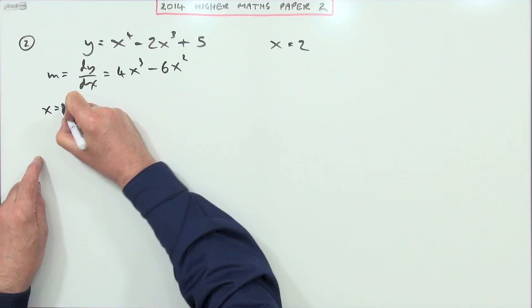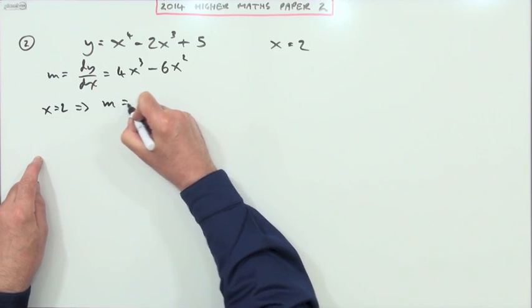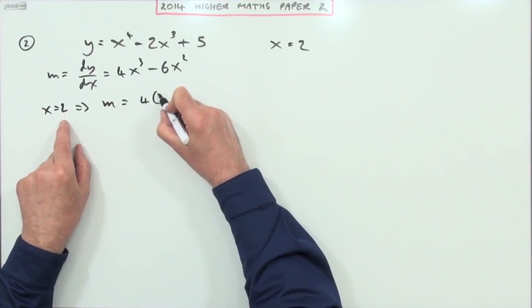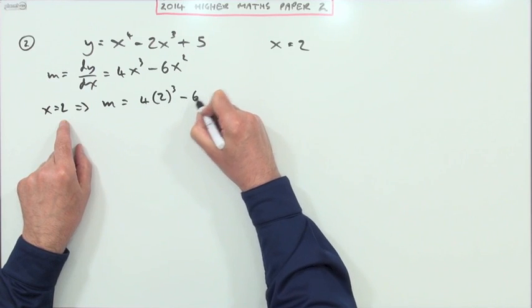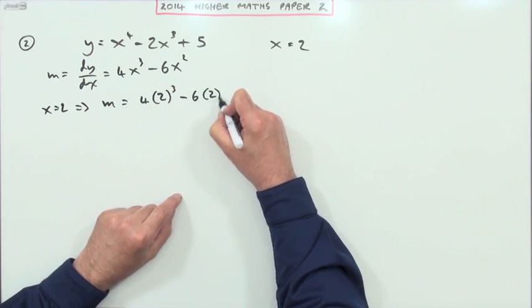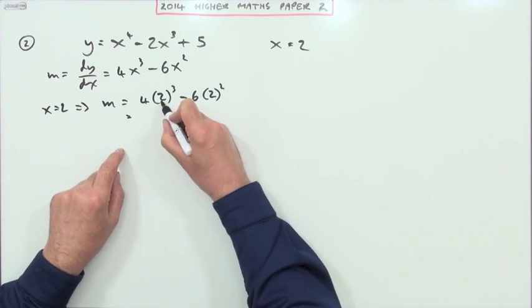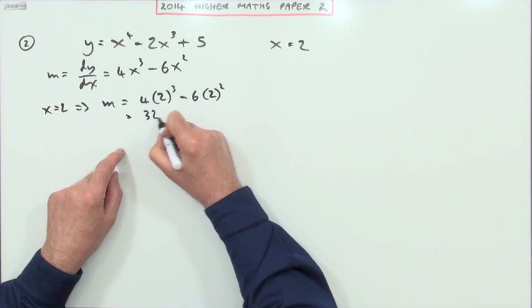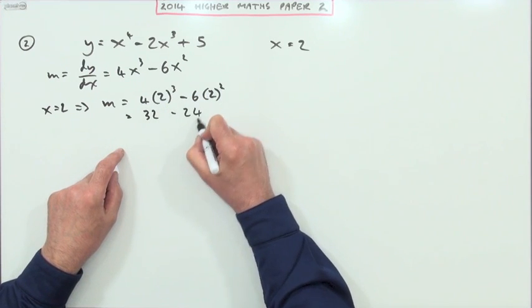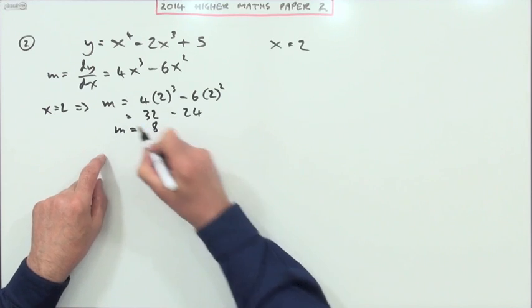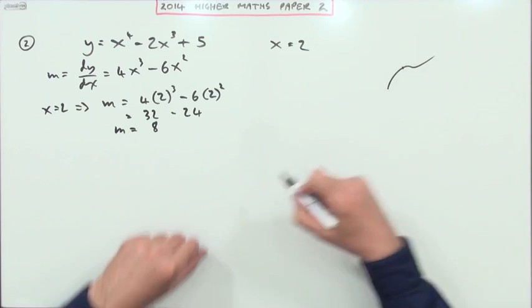So if x is equal to 2, that means the gradient will be 4 times, and that's what? 2 cubed minus 6 times, that'll be 2 squared. 2 cubed, that's 8. 4 times 8 is 32. 2 squared is 4. 6 times 4 is 24. So that's 8. So the gradient is 8 on this part of the curve.